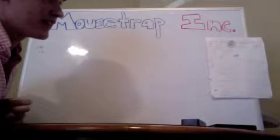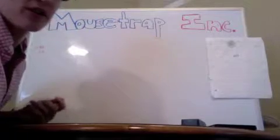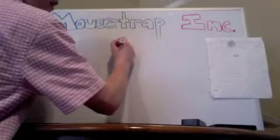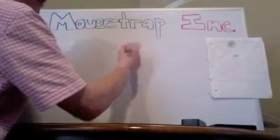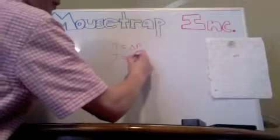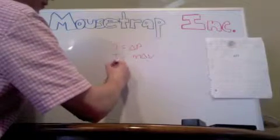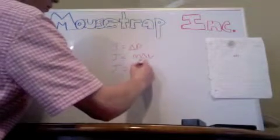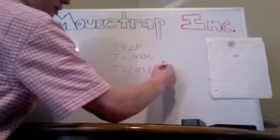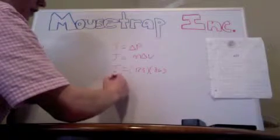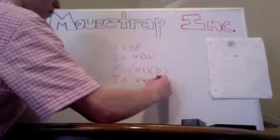Now we're going to take a look at the impulse on the mousetrap car. Impulse is the force acting during a period of time — also the change in momentum. So impulse J equals delta P, the change in momentum, which is also M delta V. Plugging in the mass of the car — 0.123 kilograms — times the change in velocity of 0.36 meters per second, we get our impulse of 0.044 kilogram meters per second.